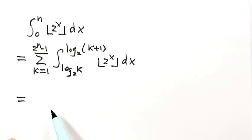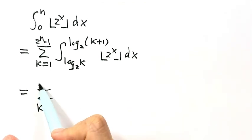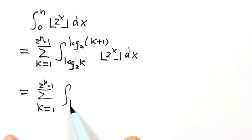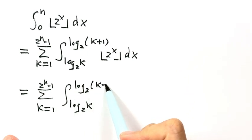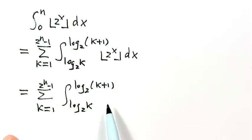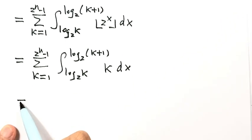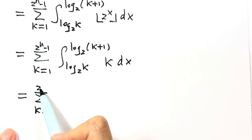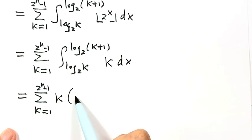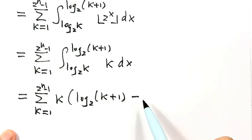Let's simplify the inside part. Based on what we just discussed, in this interval the floor function of 2 to the x equals constant k. This is the crucial part of the problem. Now let's evaluate this integral — it's just k times the upper bound minus the lower bound, that is k times log base 2 of k plus 1 minus log base 2 of k.